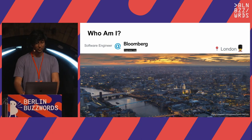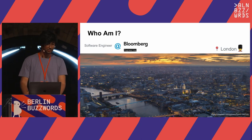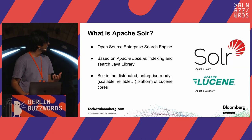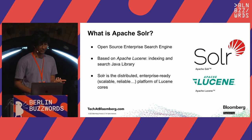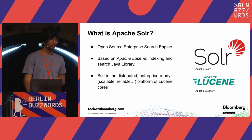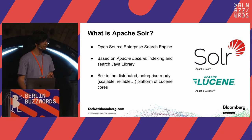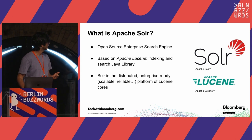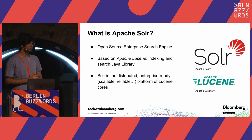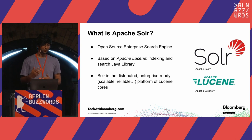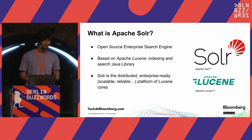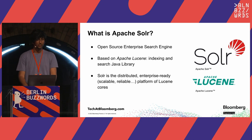We use Apache Solr to provide search functionality to the News product. Just a very quick recap of what Apache Solr is. It's an open source enterprise search engine based on another open source library called Apache Lucene, which is primarily an indexing and search Java library. Solr is a layer on top of Lucene to provide an enterprise-ready, distributed, scalable platform — which is essentially Solr — and then it's an enterprise-grade search engine.